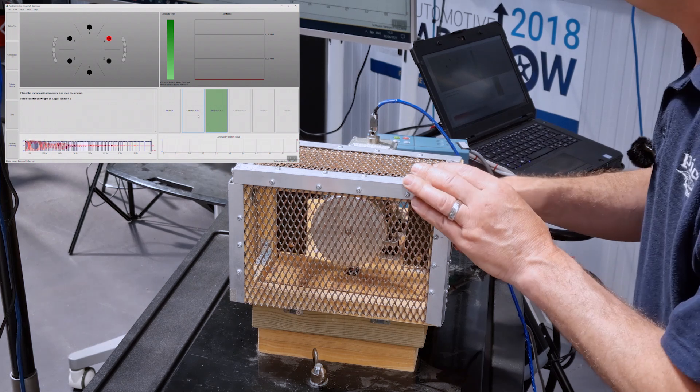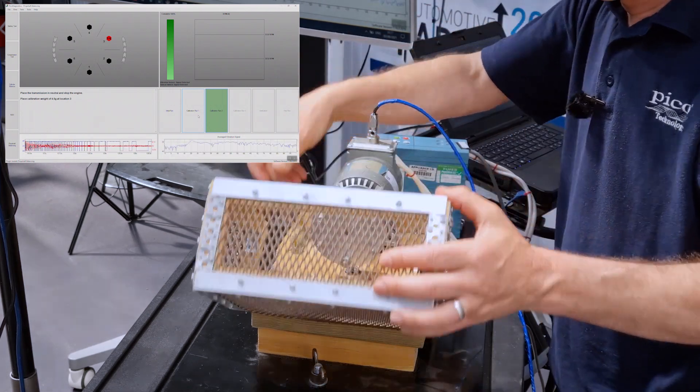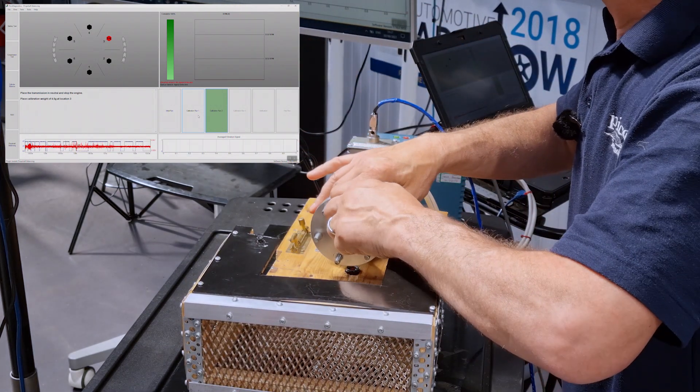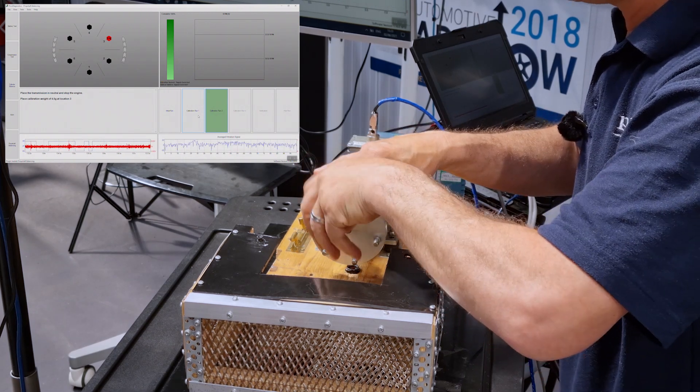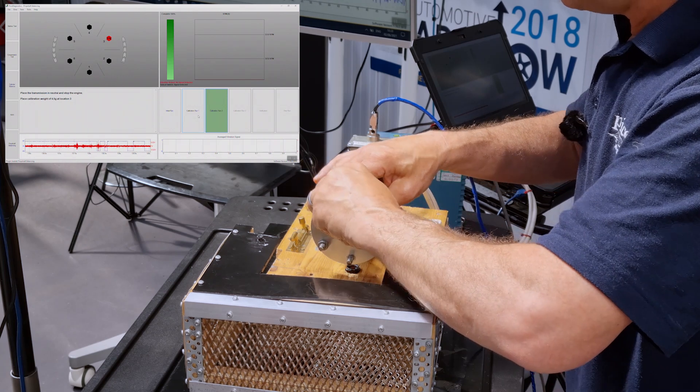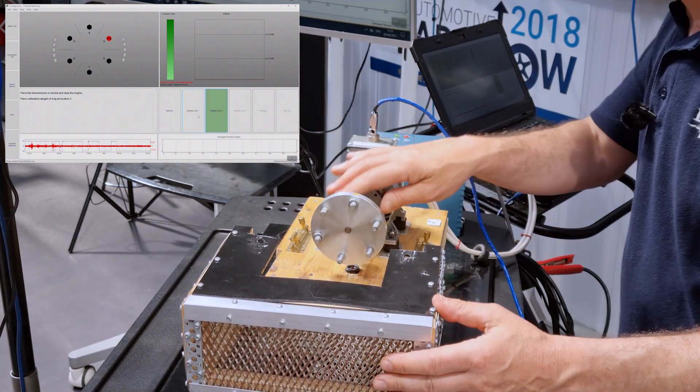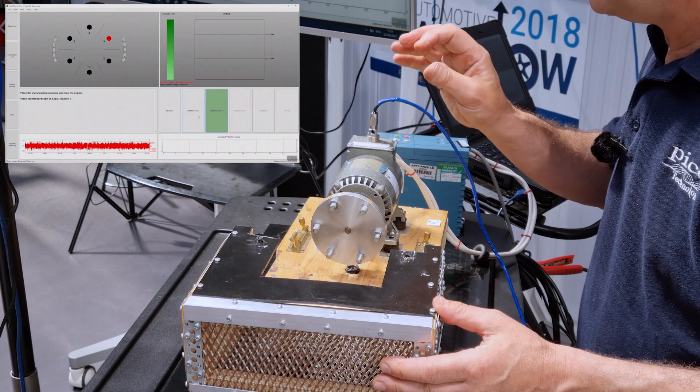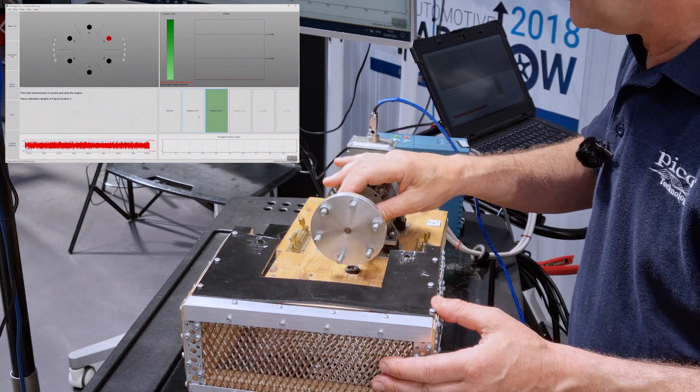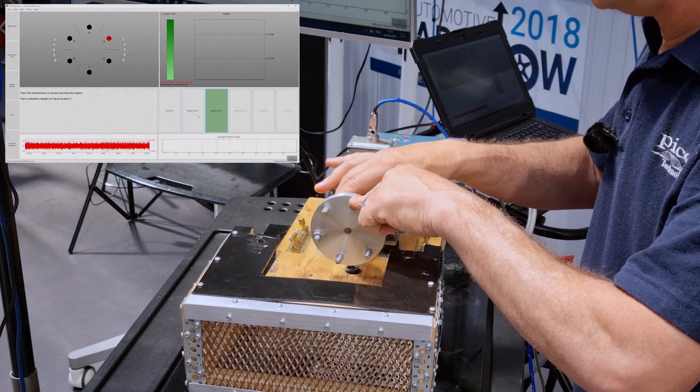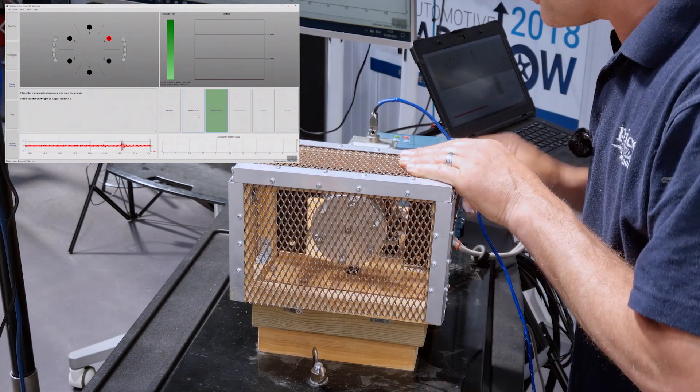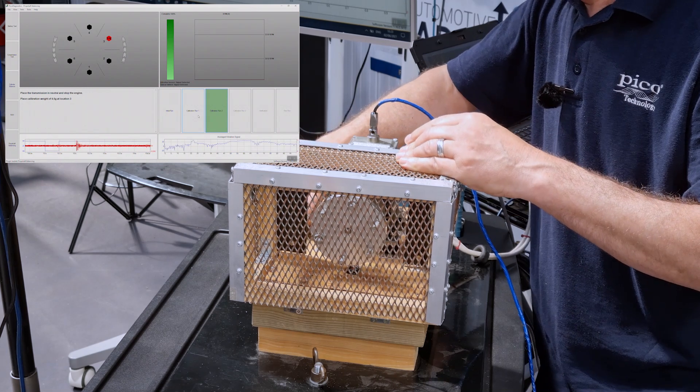Now, the software is asking us to place that deliberate imbalance at a different bolt. So, now on bolt number three. And this is why it was important to label these bolts. Now then, we should see a marginal improvement if just by going by a vibration level and noise level because we're not far off having a trial balance opposite our imbalance. In the real world, we wouldn't know this, of course.